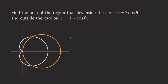Hello everyone. We are going to talk about finding the area of the region that lies inside the circle r equals 3 cosine theta, and then outside the cardioid r equals 1 plus cosine theta. The graphs for both curves are already shown here. We want the portion of the region that is inside this orange circle and outside the cardioid.